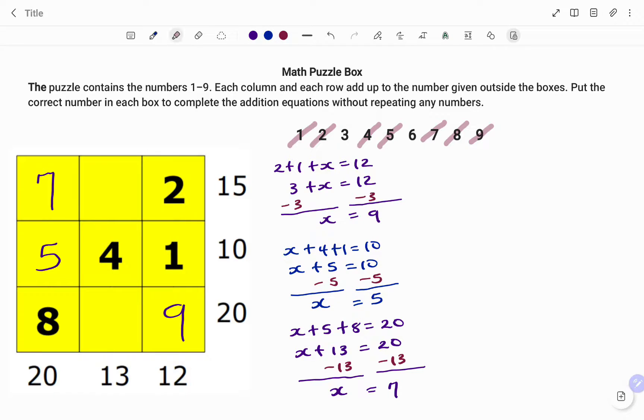So using the first row at the top, the numbers must add up to 15. My missing variable will be x. So I have 7 plus x plus 2 equals 15.